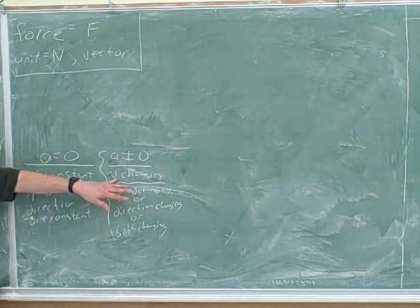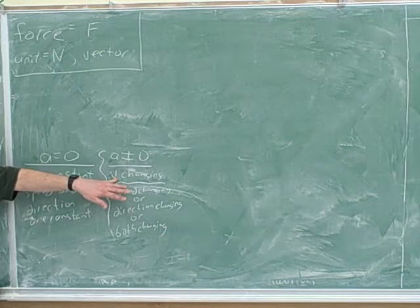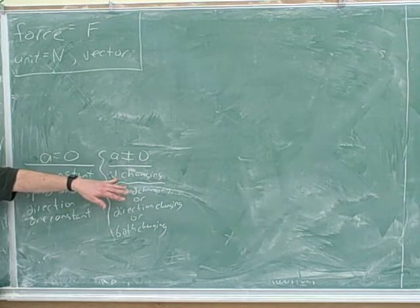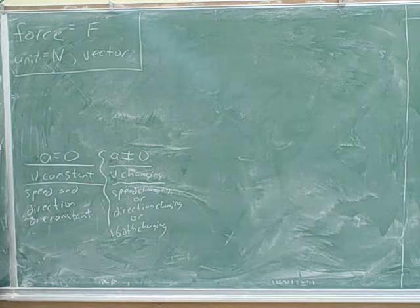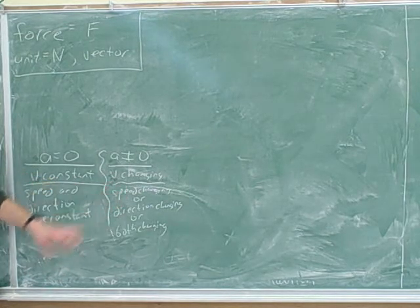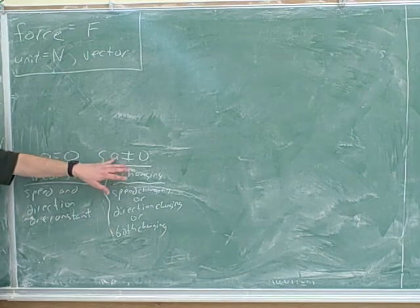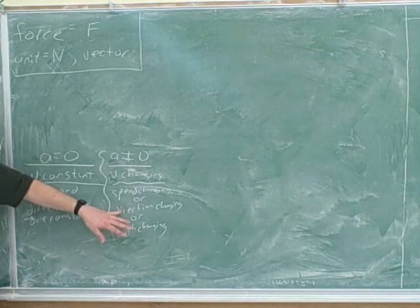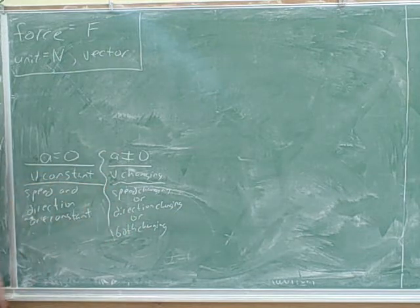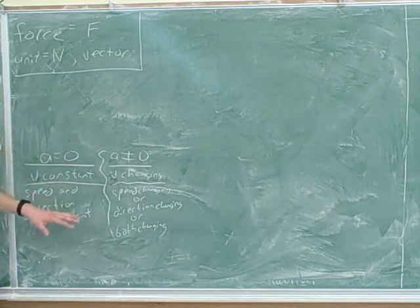Remember that a vector has a magnitude and a direction. So if either the magnitude or the direction is changing, we would say that the vector is changing. So even if you're only changing direction, your velocity is still changing, even if the speed is constant. So if your acceleration is not zero, that does not mean that your speed is necessarily changing. It could be your direction is changing. Or maybe they both could be changing. This is a very important little table here.